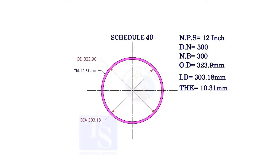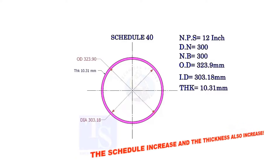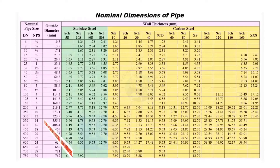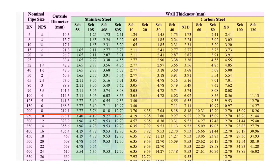Let us check the dimensions of the same size pipe with a higher schedule. As the schedule increases, the OD remains constant, the ID decreases, and the thickness increases. Compare the thickness of an 8 inch pipe in the chart — the thickness of the pipe increases as the schedule increases.